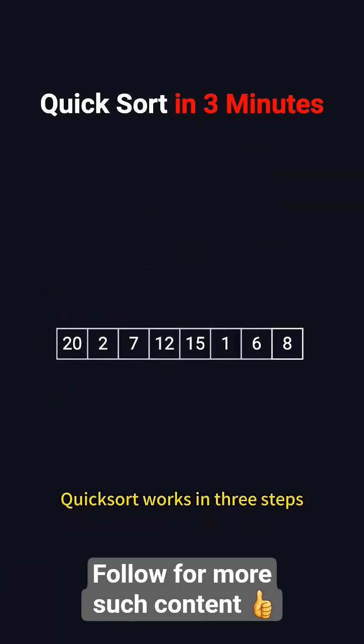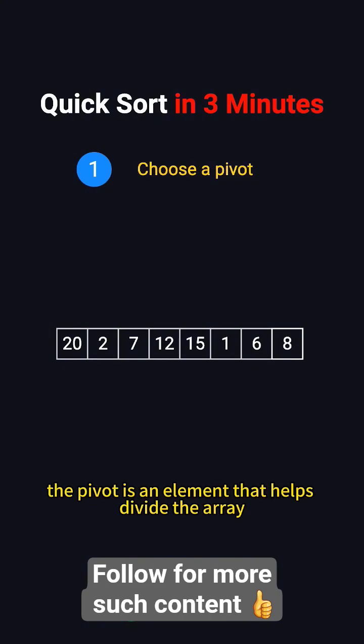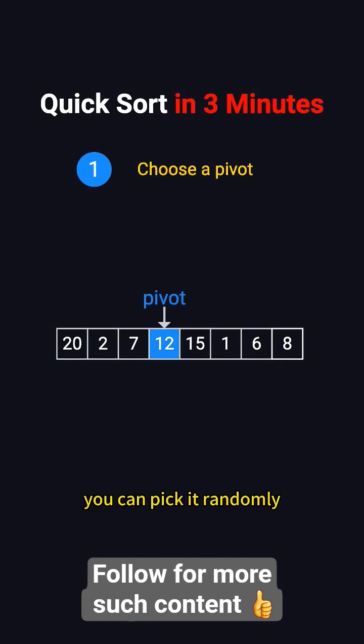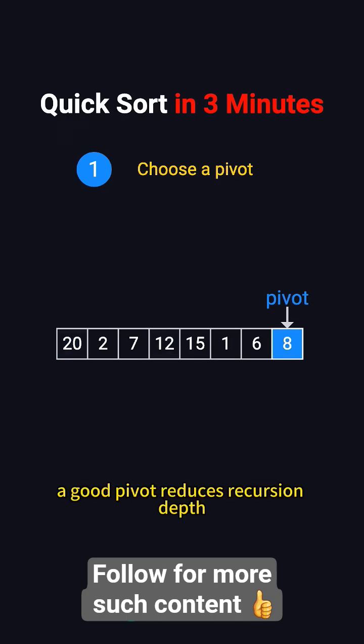QuickSort works in three steps. First, choose a pivot. The pivot is an element that helps divide the array. You can pick it randomly or use the first or last element. A good pivot reduces recursion depth, making sorting faster.